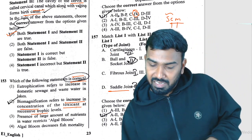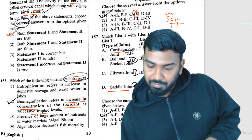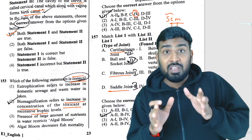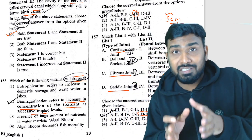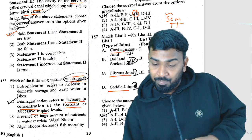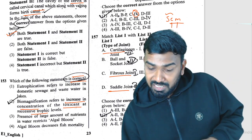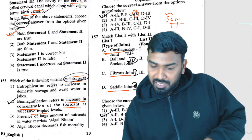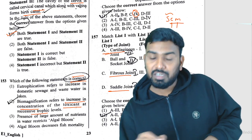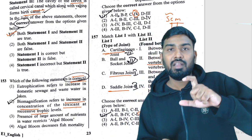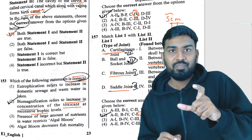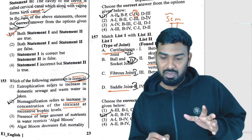Continuing Q157: fibrous joints are immovable joints found between skull bones. Cartilaginous joints are slightly movable and found between adjacent vertebrae of the vertebral column. So the full matching is complete.